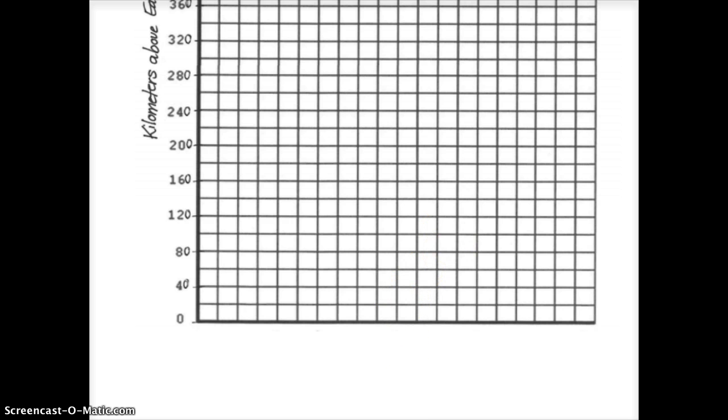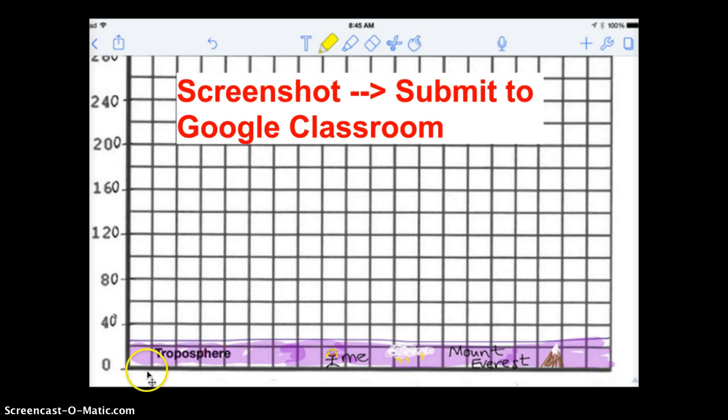For example, here's when I started. So I have the troposphere starting at zero kilometers and then going up to the appropriate altitude. I colored it purple for no reason. It can be any color you want. Light blue would make sense.